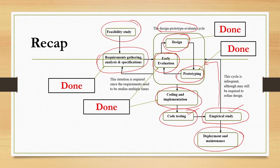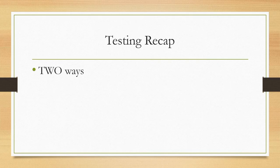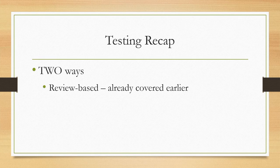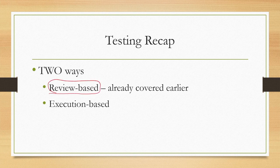We learned about the coding and implementation stage — particularly how to write good code and good practices in coding. Once coding is done, we need to test it for finding errors and rectify those errors, which requires code testing. Currently we are discussing code testing, and in this lecture we are going to discuss the remaining part of code testing at the unit level — that is, white box testing. In testing, we broadly have two ways: review-based and execution-based. We have covered review-based code testing in detail.